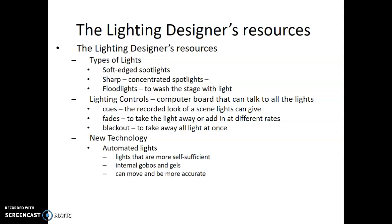A lighting controller can put a look on the stage — lighting up areas — and then record that look. We call that a cue. A cue is a recorded look of a scene of lights on stage. For example: cue one is lights are blue, cue two is add a spotlight, cue three is blackout, cue four is take the lights away, cue five is bring red lights up. Every single change in the lights is a look, which becomes a cue when recorded. We hear the term cues a lot in design — sound cues, costume change cues, actors have line cues.